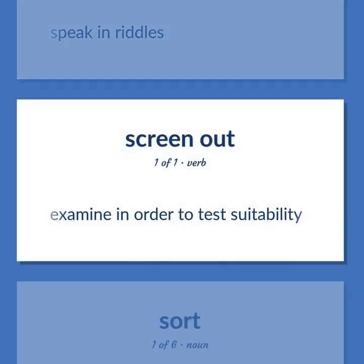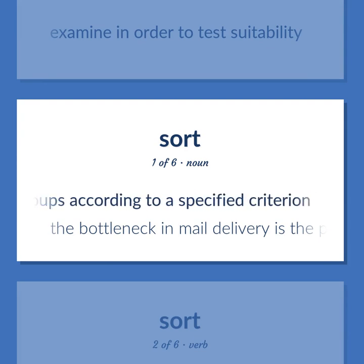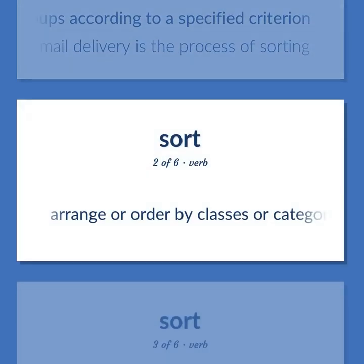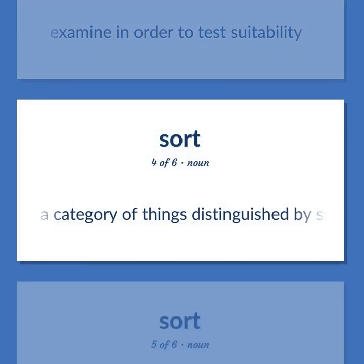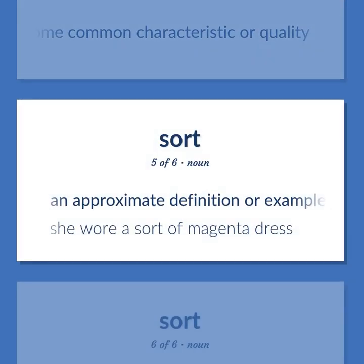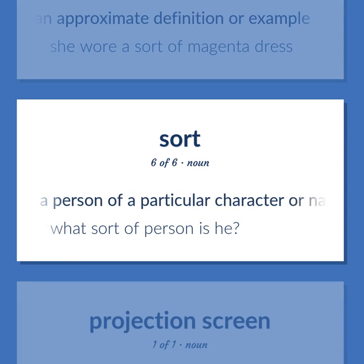Examine in order to test suitability. An operation that segregates items into groups according to a specified criterion. The bottleneck in mail delivery is the process of sorting. Arrange or order by classes or categories. Examine in order to test suitability. A category of things distinguished by some common characteristic or quality. An approximate definition or example. She wore a sort of magenta dress. A person of a particular character or nature. What sort of person is he?